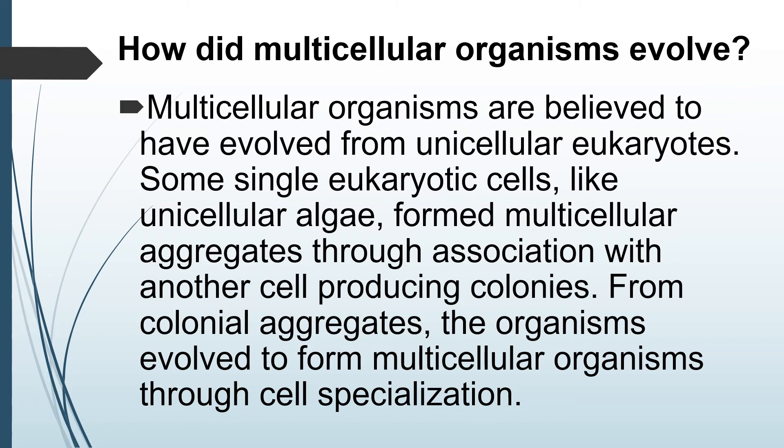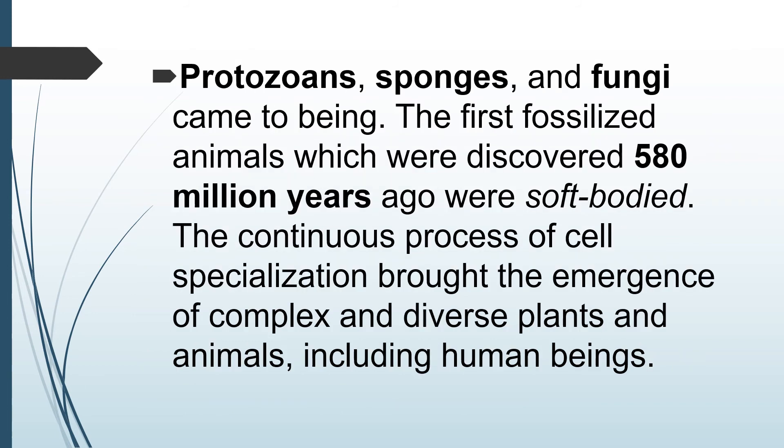How did multicellular organisms evolve? Multicellular organisms are believed to have evolved from unicellular eukaryotes. Some single eukaryotic cells, like unicellular algae, form multicellular aggregates through association with another self-producing colonies. From colonial aggregates, the organisms evolved to form multicellular organisms through cell specialization. Protosomes, sponges, and fungi came to be.